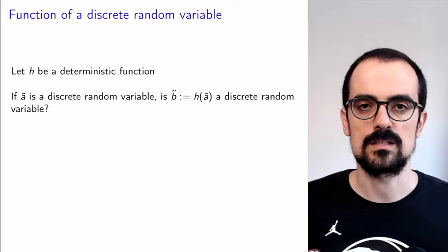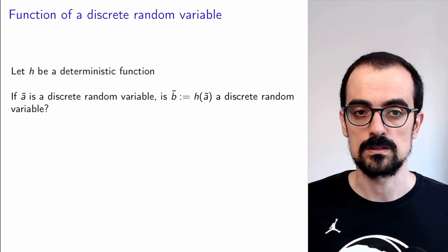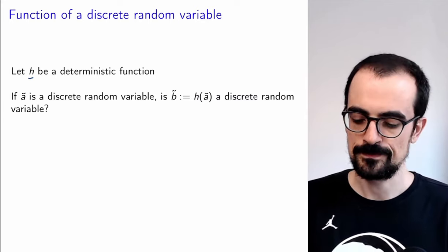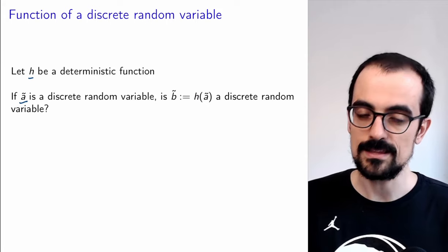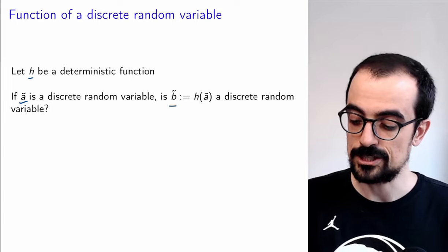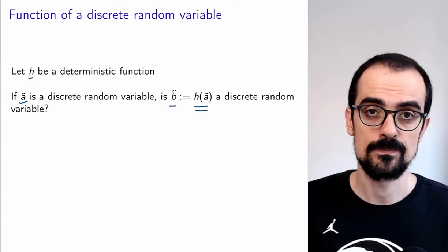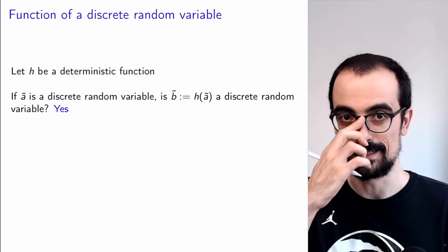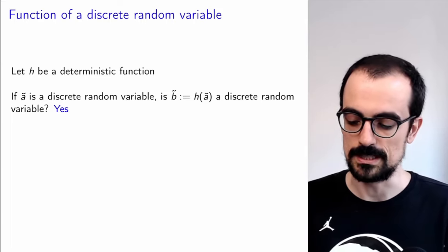Let's remind ourselves how we do this for discrete random variables. We're going to call our deterministic function that we know h. Now if we have a discrete random variable A, the first question we need to ask is: is B, defined as h applied to A, a discrete random variable? The answer is yes.